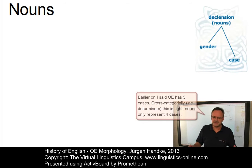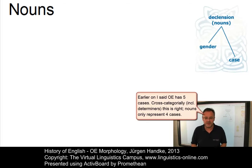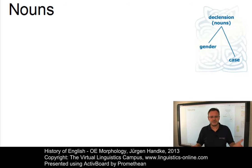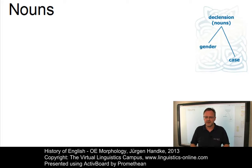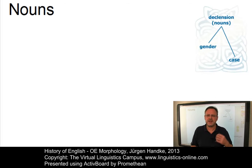With four distinct cases, which by and large integrate number distinctions, and three distinct grammatical genders, the morphology of Old English nouns was far more complex than in present-day English, where the gender distinction has been lost and only two cases — the genitive case and the oblique case — have survived. The declension of nouns can be subdivided into several groups: the general masculine declension, the general neuter declension, the general feminine declension, the AN declension, and irregular declensions.